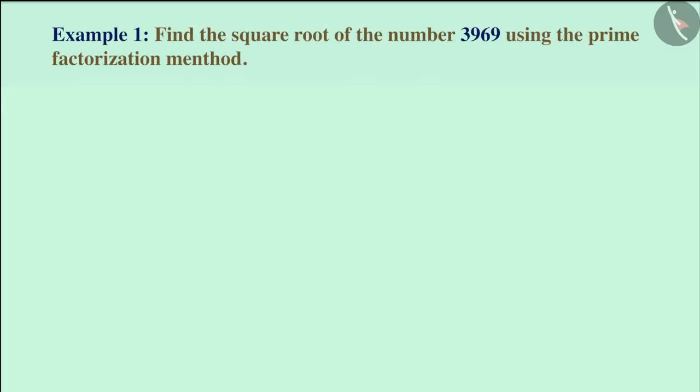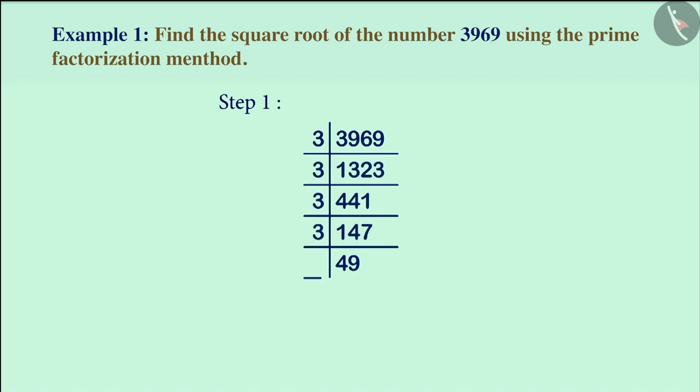Find the square root of the number 3969 using the prime factorization method. In the prime factorization method, we will first do the prime factorization of the number 3969. And we will know all its prime factors this way.